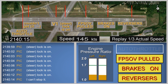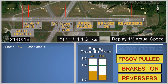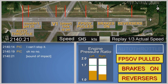The airplane exited the runway onto the paved overrun and the thrust reversers were deployed. The airplane exited the paved overrun onto the grass, traveling about 105 knots. The sound of an impact was recorded about one second later at a ground speed of about 97 knots, followed by the end of recorded data.